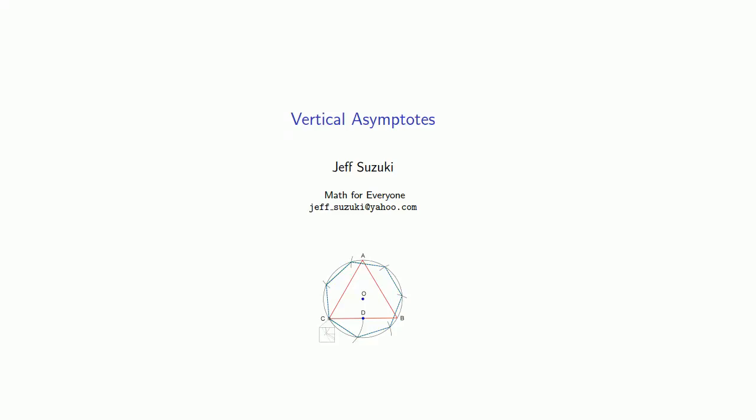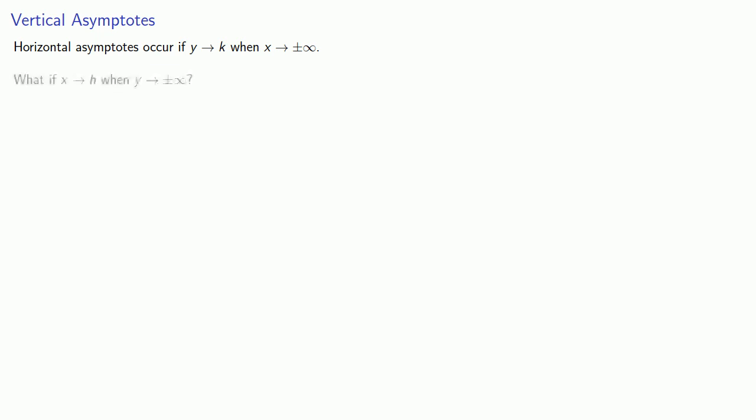Where there's horizontal, there must also be vertical. Horizontal asymptotes occur if y goes to k as x goes to plus or minus infinity. But what if we switch things around? What if x goes to h when y goes to plus or minus infinity? In this case, we obtain a vertical asymptote.